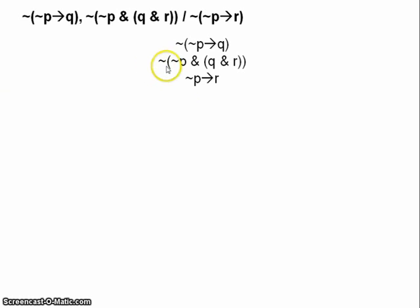Okay, so the second premise is a negated conjunction. The third is a conditional. So both of those will branch. But our first premise here is a negated conditional. So we can derive from that true antecedent, false consequent, which is not P and not Q.